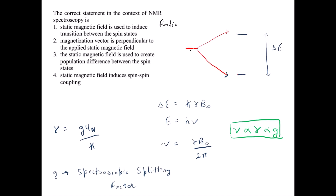We need an NMR-active nucleus with non-zero spin. For a proton, spin is one-half, so it splits into minus-half and plus-half on application of a magnetic field. Without a magnetic field it's degenerate, but once you apply the field it splits into plus-half and minus-half. The energy difference between these two states arises because of the magnetic field — the greater the magnetic field, the greater the difference.